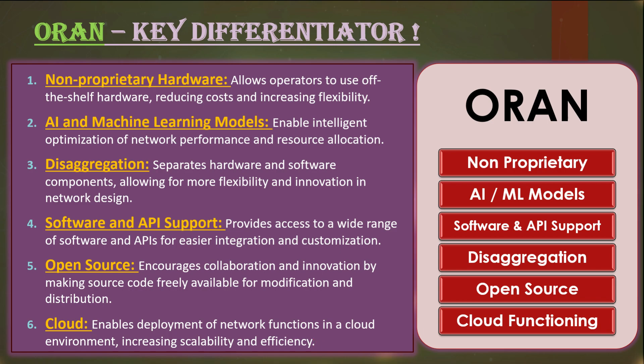The second important building block of OpenRAN is software. Communities like ONAP, in collaboration with the O-RAN Alliance, have a major focus on evolving software functions. The vision is to develop new and trending features, and the goal is also to overcome problems and issues in the current OpenRAN ecosystem by debugging and solving them.